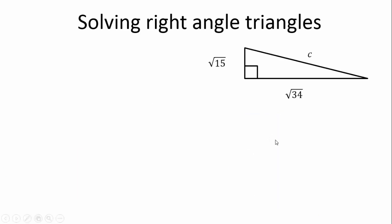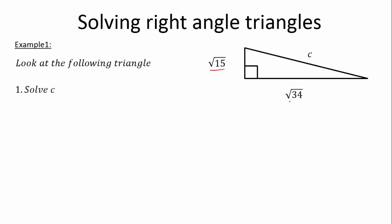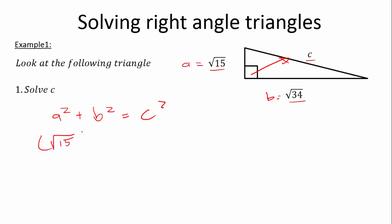Now let's get into something a little bit more tricky. We have an example — look at the following triangle. It has a square root of 15, a square root of 34, and a C, and we are asked to solve for C. C is our hypotenuse — it is opposite our right angle. We can use our equation: A squared plus B squared equals C squared. We're going to make A equal to the square root of 15, and B equal to the square root of 34. So A squared is the square root of 15 squared, plus B squared which is the square root of 34 squared, and that is equal to C squared.